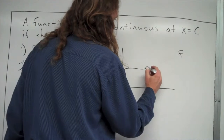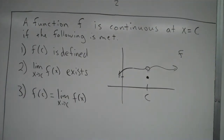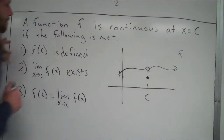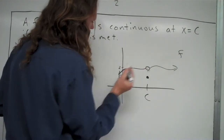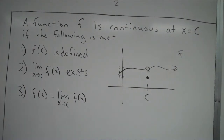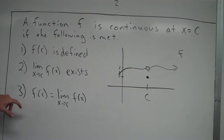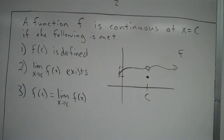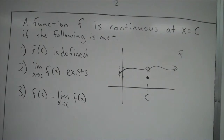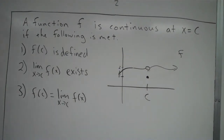Let's look at another case — something with a random dot at x equals c. The function is defined there, so condition 1 is met; f of c equals 1. The limit as x approaches c also exists because from the left and right the y value goes to the same place — let's say y equals 2 — so condition 2 is met. However, condition 3 breaks down because f of c equals 1 but the limit equals 2, so they don't equal each other. That's another example where the graph is not continuous.